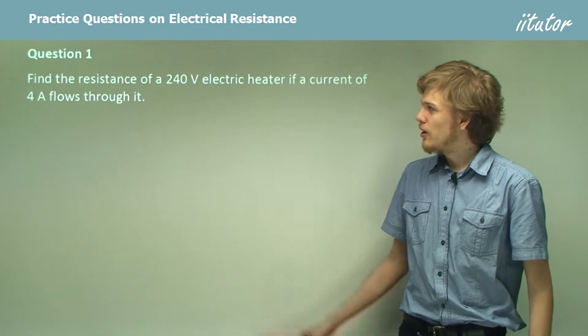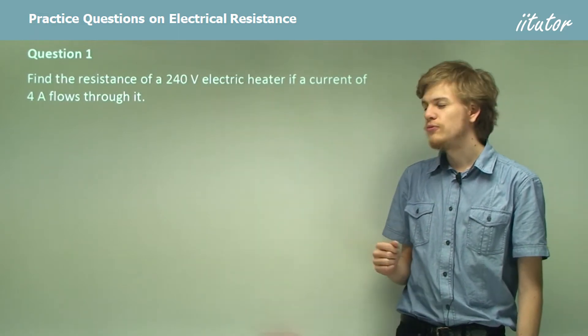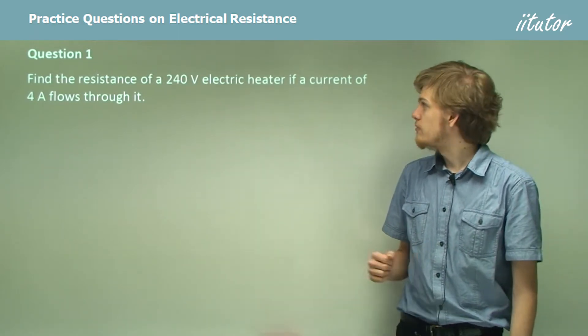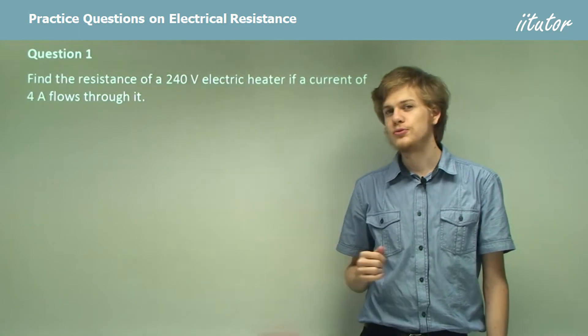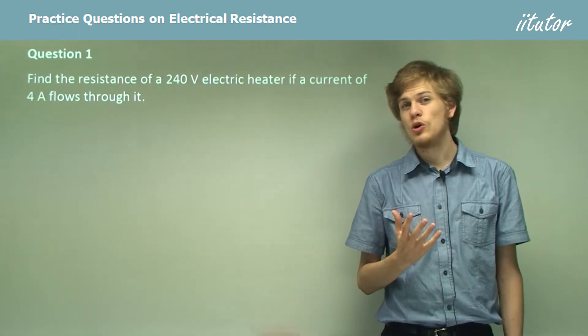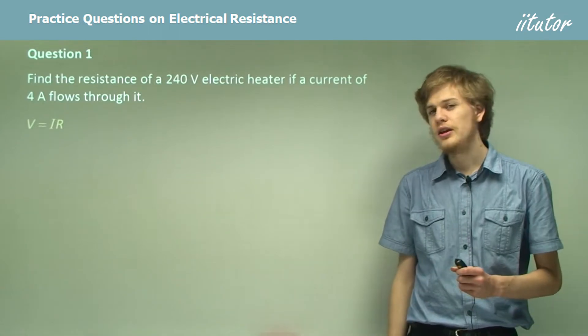Question 1. Find the resistance of a 240 volt electric heater if a current of 4 amps flows through it. To solve this all we need is Ohm's law.